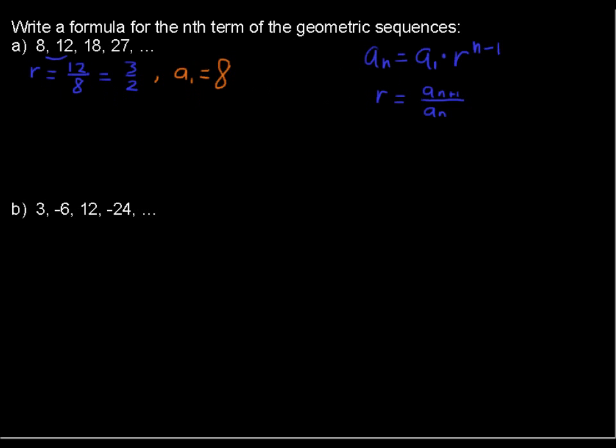Then we could just take that information and plug it right in, and we have a sub n, the nth term, equals 8 times 3 halves raised to the n minus 1. That's the formula for the nth term of this geometric sequence.